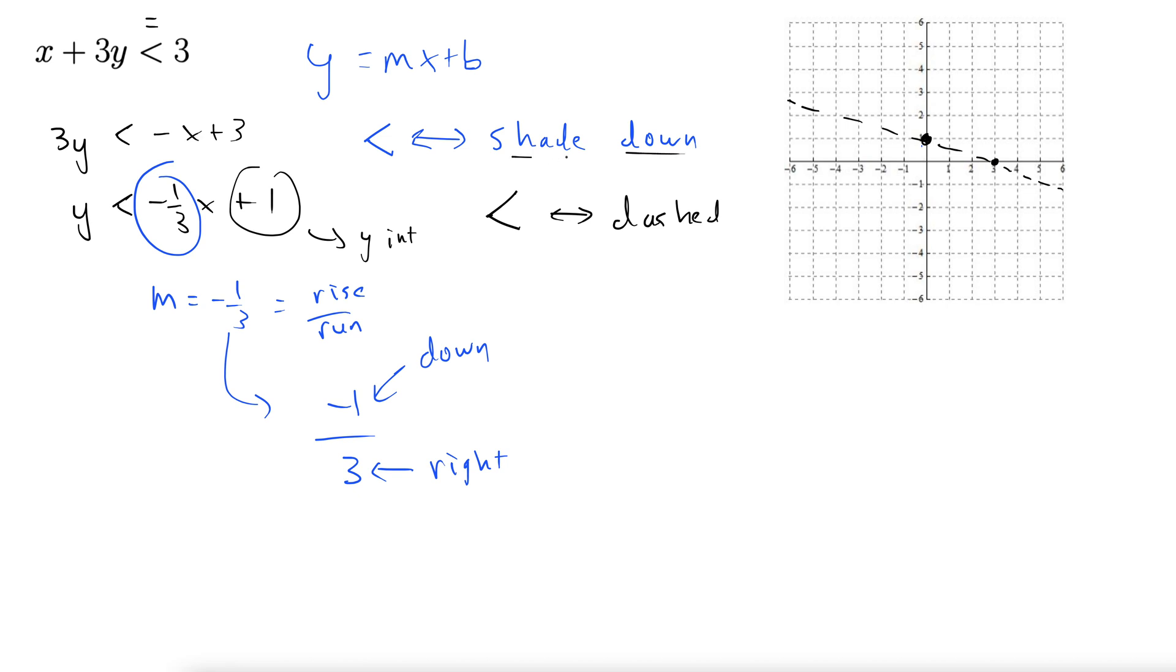And then we shade down. Shade down because it's less than. If this were greater than, we would shade up. This shading up and down trick only works if it's in y equals mx plus b form.